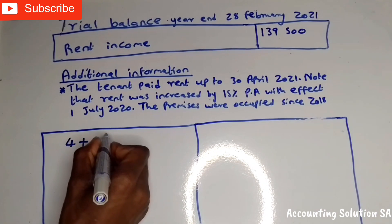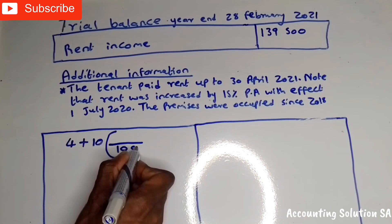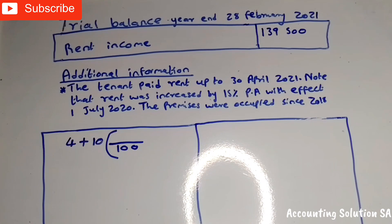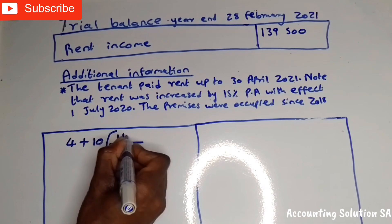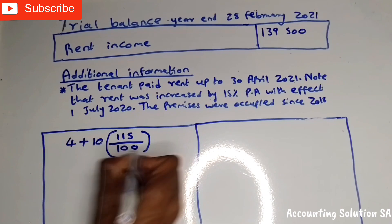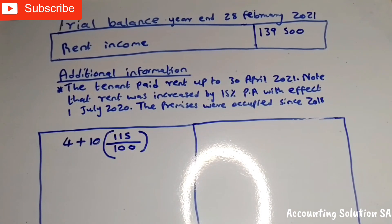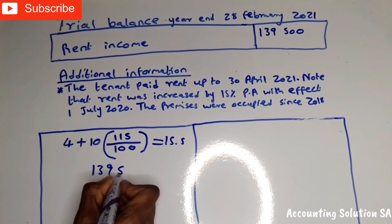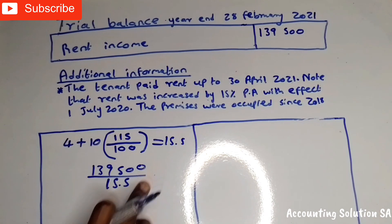Now we open the bracket. On the numerator we have 100%. Then on the denominator we put: (4 months × 100) plus (10 months × 115), because 100 plus the 15% increment equals 115. When you punch all of this into your calculator you get 15.5. So you take R139,500 and divide by 15.5, which gives you the amount of rent before the increase.